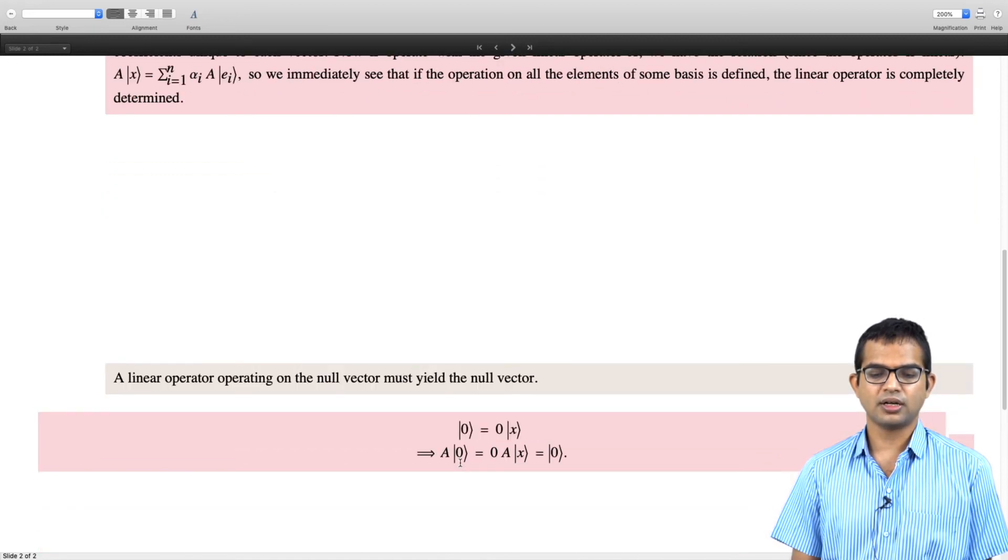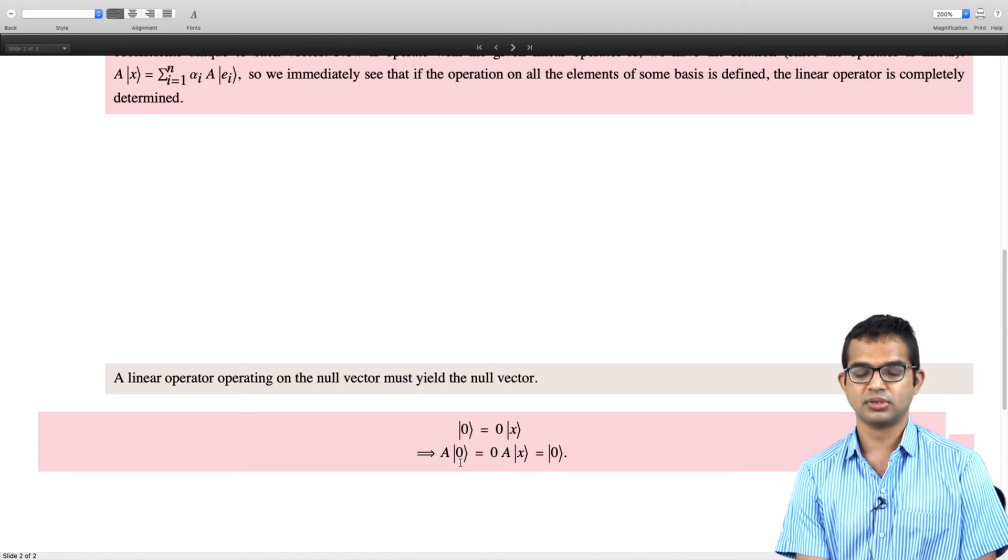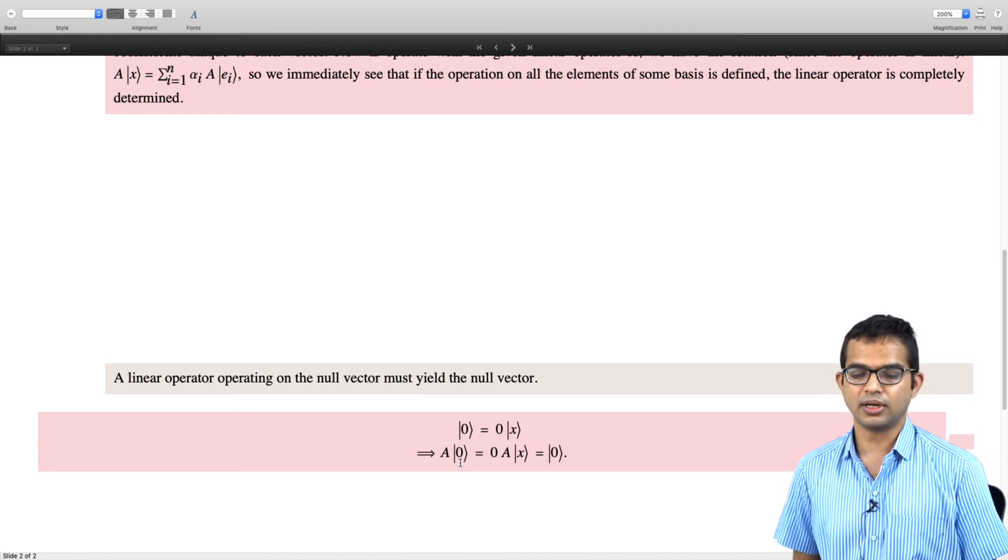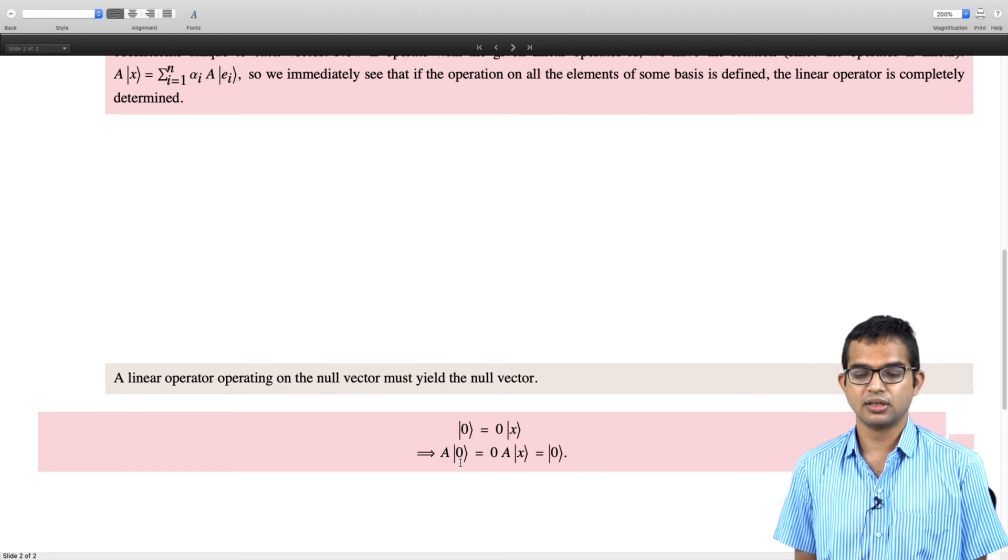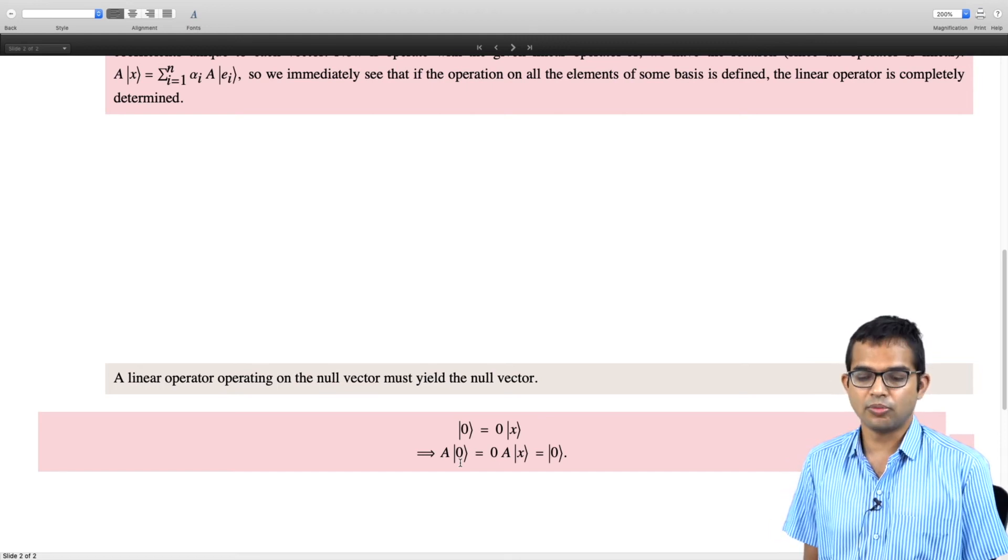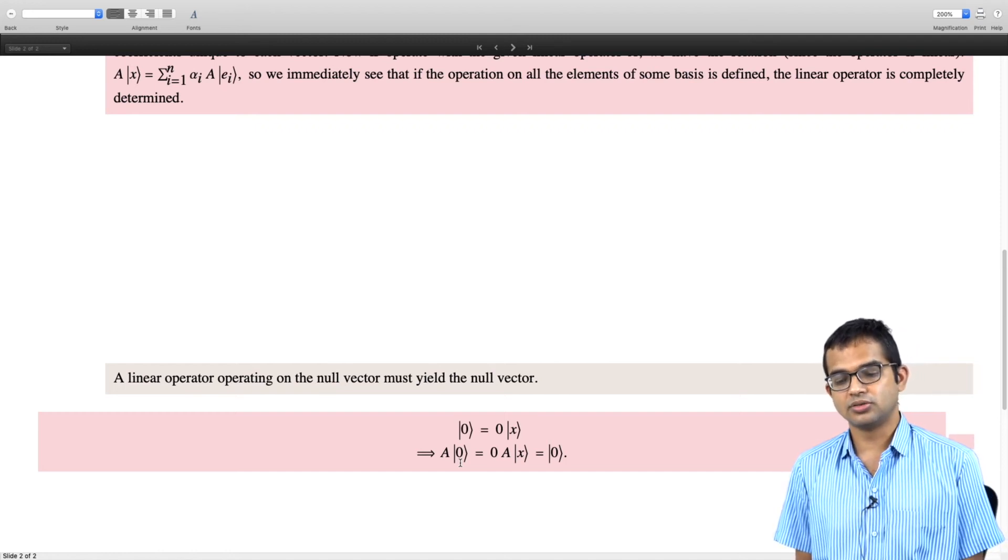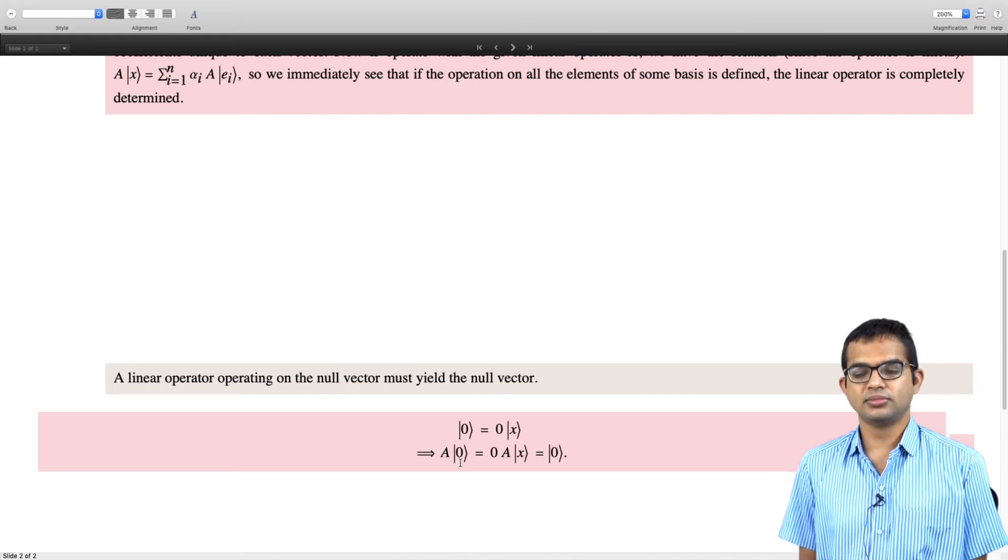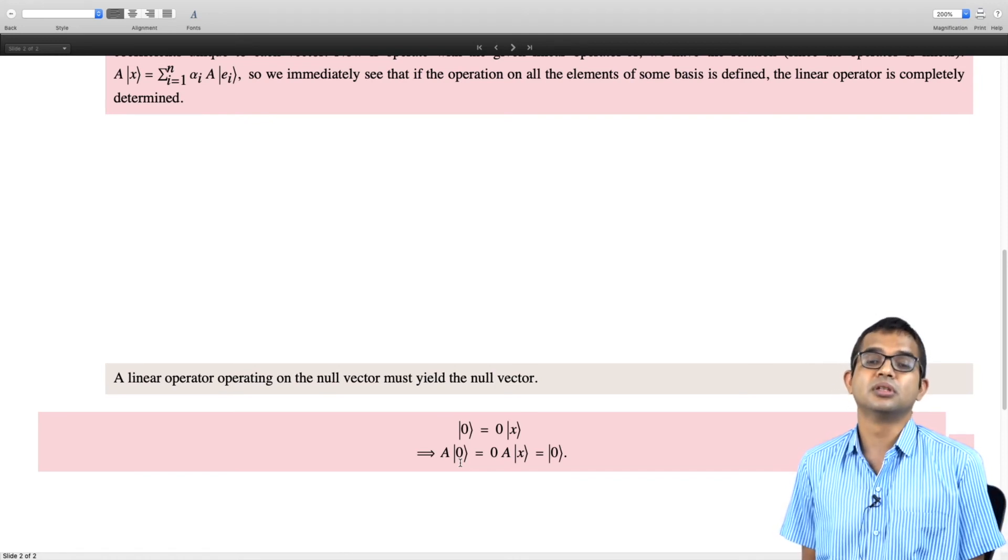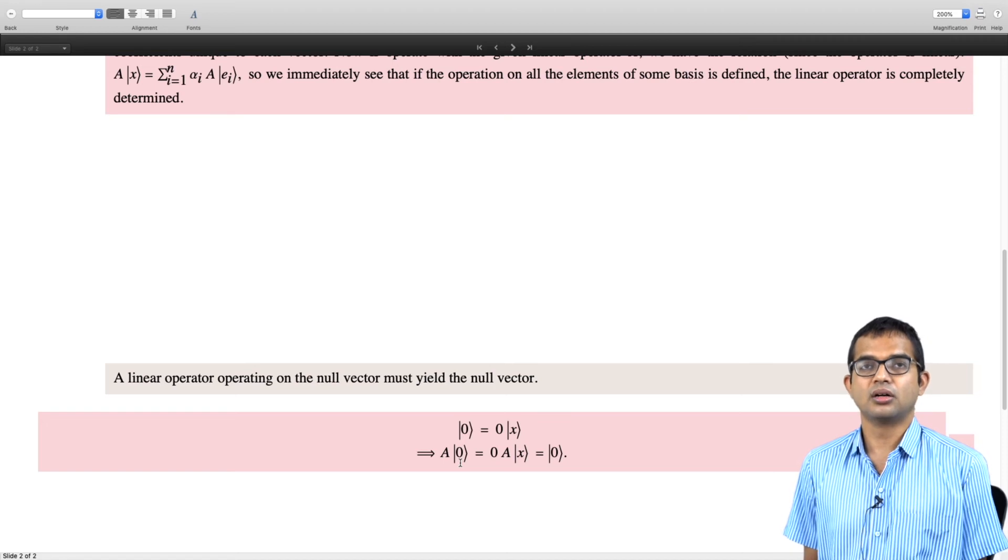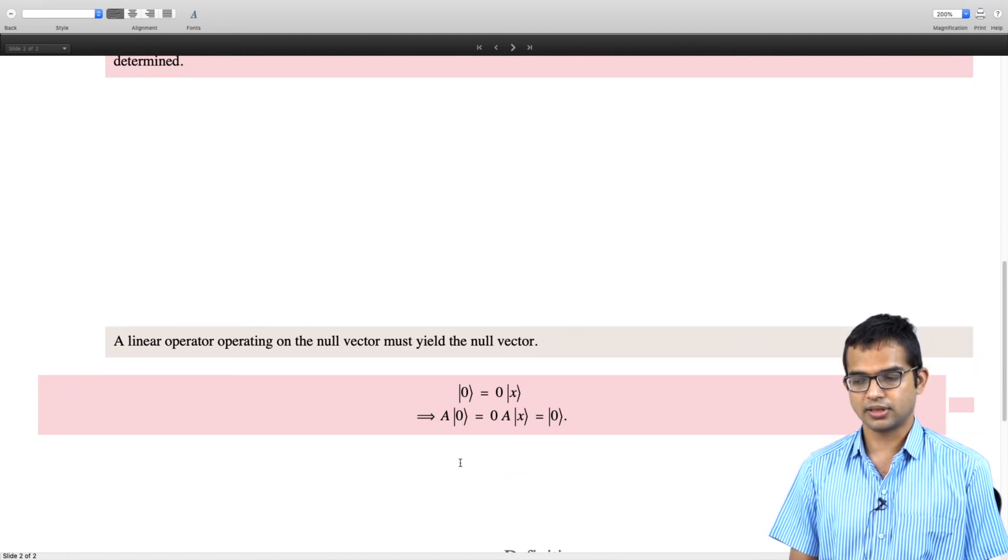Another consequence: a linear operator acting on the null vector must yield null vector. This also comes from linearity and the basic property of a null vector. If you were to multiply any vector with the coefficient 0, you get the null vector, and now operate with your linear operator on both sides. You have A acting on 0 is the same as 0 times A x, but 0 times A x is some other vector. 0 times this vector also must be 0. A times the null vector is got to be null vector. You cannot get some other vector if the linear operator acts on a null vector.